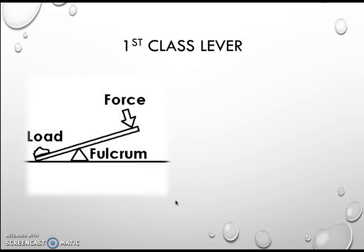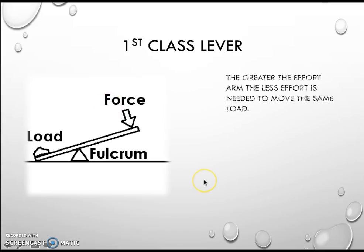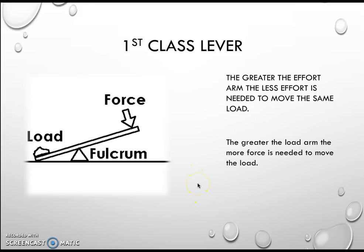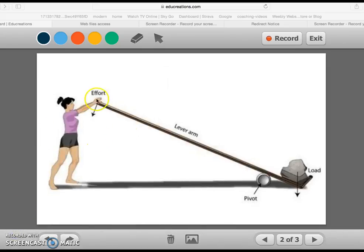For a first class lever — there's our load, fulcrum, and then our force or effort. The greater the effort arm, the less effort is needed to move the same amount of load. The greater the load arm, the more force is needed to move that load. Here's an example: because of the huge distance of the effort arm compared to the load arm, with a minimal amount of effort we would be able to lift quite a significant load.